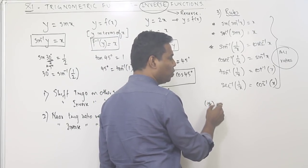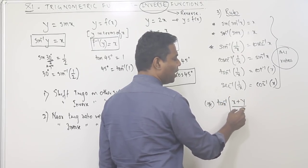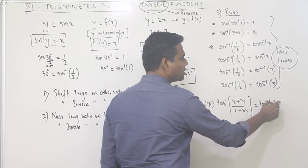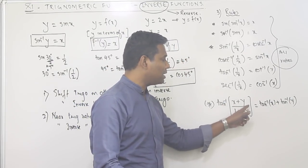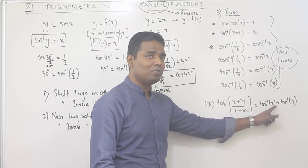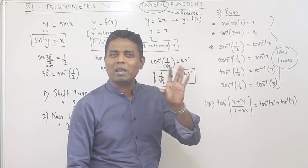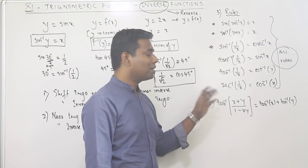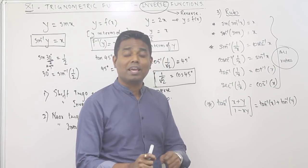One more rule: tan inverse of (x plus y) upon (1 minus xy) equals tan inverse x plus tan inverse y. This is very closely related to the formula for tan of (a plus b), which is tan a plus tan b upon 1 minus tan a tan b.